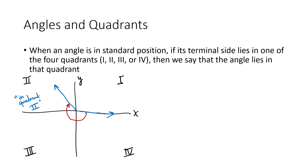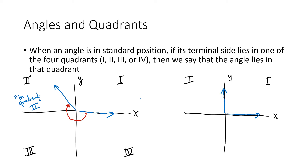There are other angles that don't fit this definition. For example, if the terminal side of an angle in standard position lies along an axis — say the initial side is the positive x-axis and the terminal side is the positive y-axis — that angle does not actually lie in any of the quadrants; in a sense it lies on the border between quadrant one and quadrant two. Most of what we're talking about here is just establishing some terminology, so you may want to come back to this video later in the series if you need to refresh your memory on what some of these terms mean.